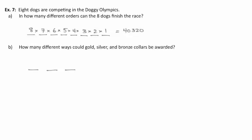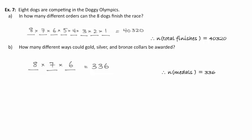How many different ways could gold, silver, and bronze be awarded? We'd have 8 ways to award the gold, 7 ways to award the silver, and 6 ways to award the bronze — giving 336 different ways to award these three medals. Here's our standard notation: number of total finishes and the number of medals.